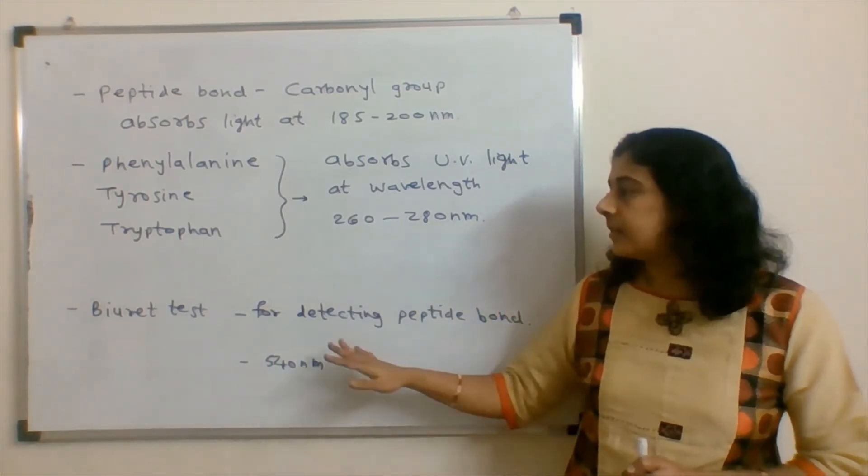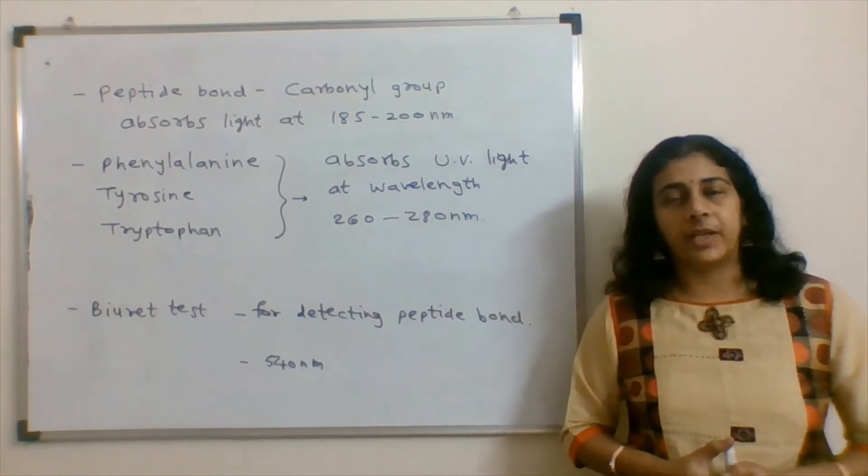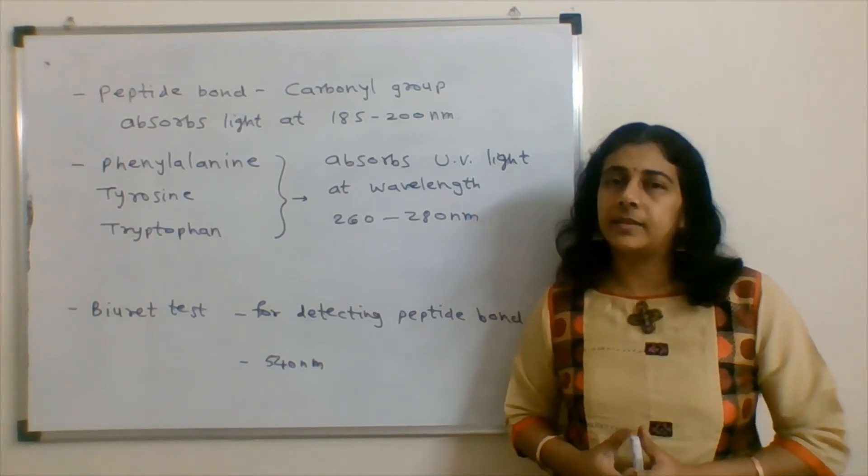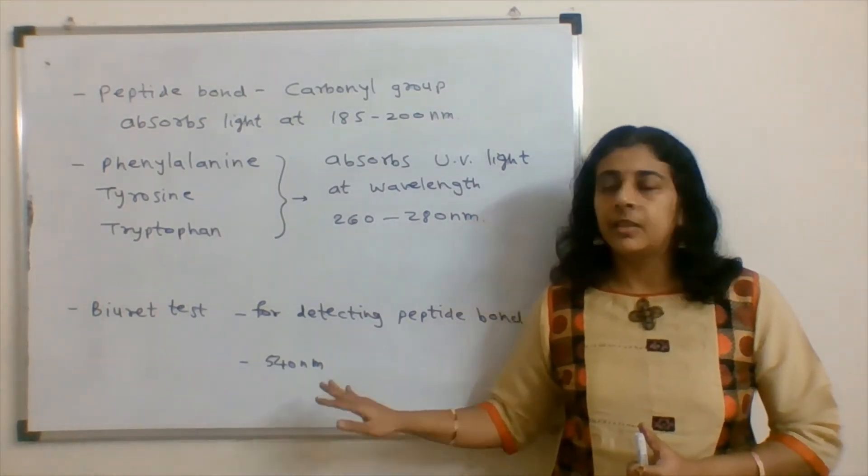Whereas, in third case, biuret test is used for the detection of peptide bond. And for the detection of biuret test, the wavelength used is a 540 nanometer. Thus, it is not given in our option.